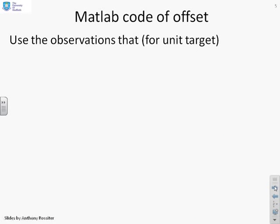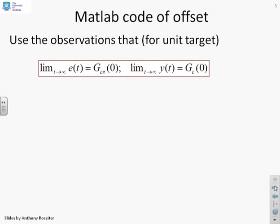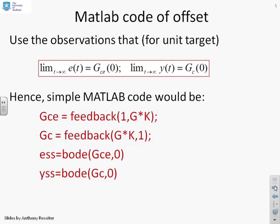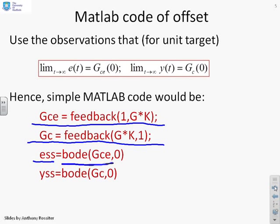Using the observations for unit target that the steady-state of the error is GCE(0) and the steady-state of the output is GC(0), a simple MATLAB code would be as follows: First, find the closed-loop transfer function, GCE from feedback(1, G*K). The closed-loop transfer function for the output is feedback(G*K, 1). Then simply substitute these transfer functions into bode. The steady-state of the error is bode(GCE, 0), and the steady-state for the output is bode(GC, 0).